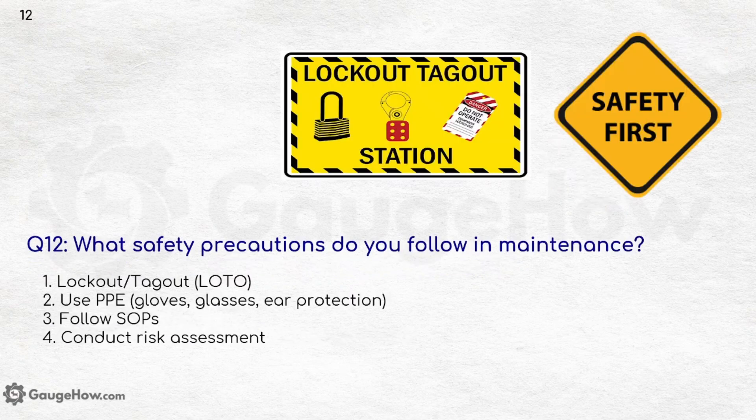What safety precautions do you follow in maintenance? Safety always comes first. First is LOTO — lockout/tagout. Then use PPE: gloves, glasses, and ear protection such as headphones. Follow SOPs and conduct risk assessment.